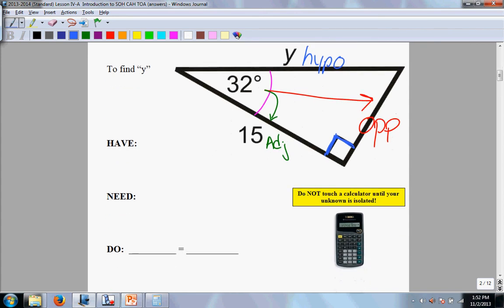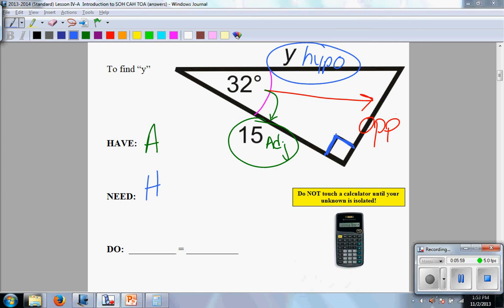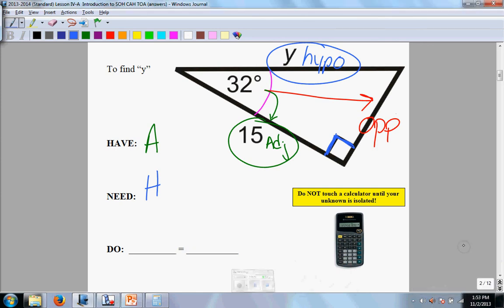Now using this, we work ourselves to have, need, do. We have the adjacent side, so I put an A for adjacent. We want the hypo side, so we put H for hypo. So look very carefully, we have an AH combination, we have an adjacent and a hypo combination.